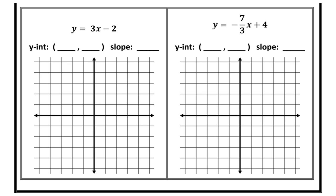Let's try a couple of problems together. Start by finding the slope and y-intercept. Slope is always connected to the x, so my slope is 3. But slope should always be represented as a fraction — if it's a whole number like 3, just put a 1 underneath, giving rise over run. My y-intercept b is negative 2, so my y-intercept ordered pair is (0, negative 2). I'm going to start by plotting (0, negative 2) on the coordinate plane, or simply find negative 2 on my y-axis.